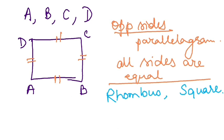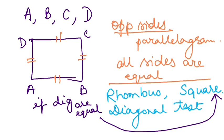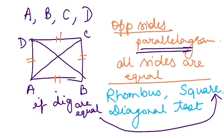So to confirm whether it is exactly a rhombus or a square, I have to do the diagonal test. If the diagonals are equal, then it is a square. If the diagonals are not equal, then it is a rhombus. So first I will find all four sides — AB, BC, CD, and AD — by applying the distance formula. If all sides are equal, we are left with two options: rhombus or square. Then I will also find the diagonals AC and BD.